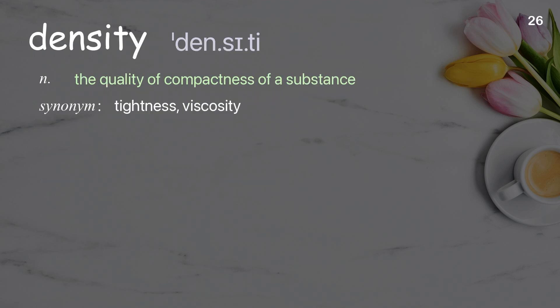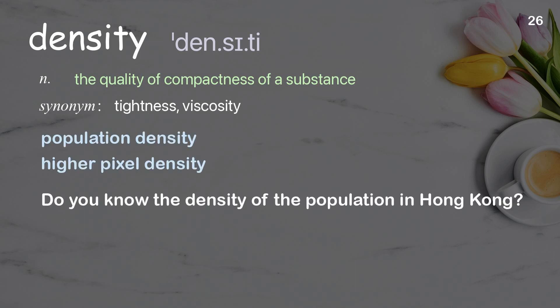Density. The quality of compactness of a substance. Examples: population density, higher pixel density. Do you know the density of the population in Hong Kong?